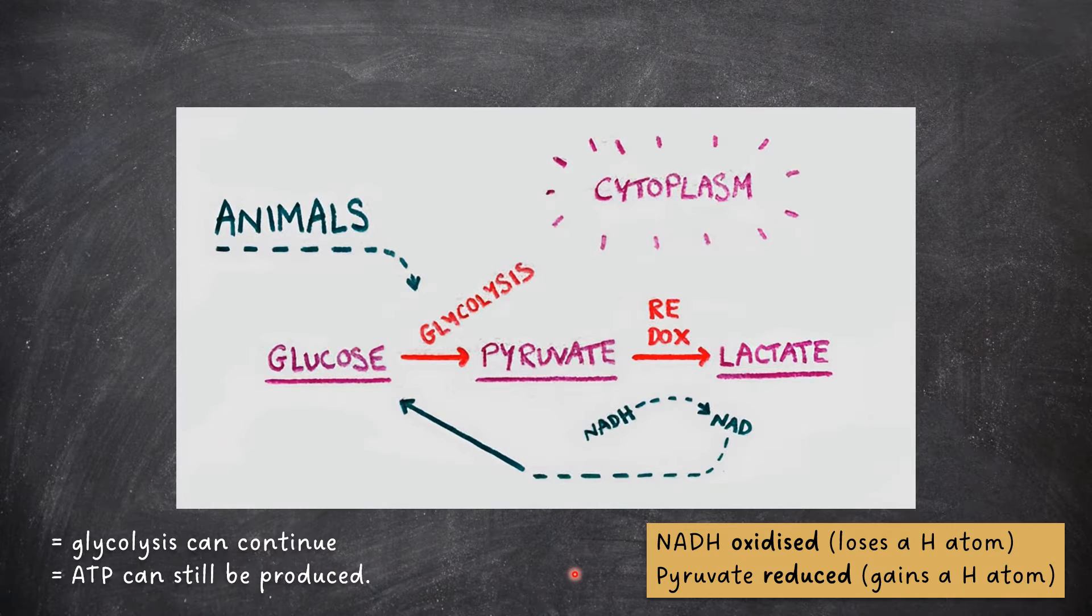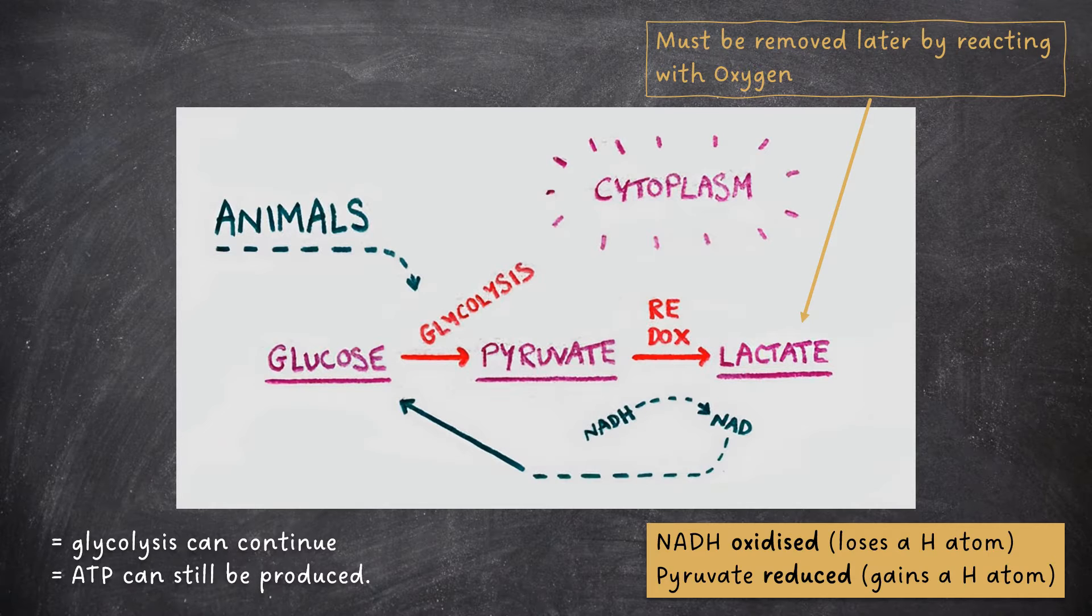However, as you'll see later, the amount of ATP produced in anaerobic respiration is much smaller than that produced in aerobic respiration, making anaerobic respiration an inefficient way of producing ATP in the long term. The lactate produced in anaerobic respiration must also be removed by reacting with oxygen, as the buildup of lactate can damage cells.